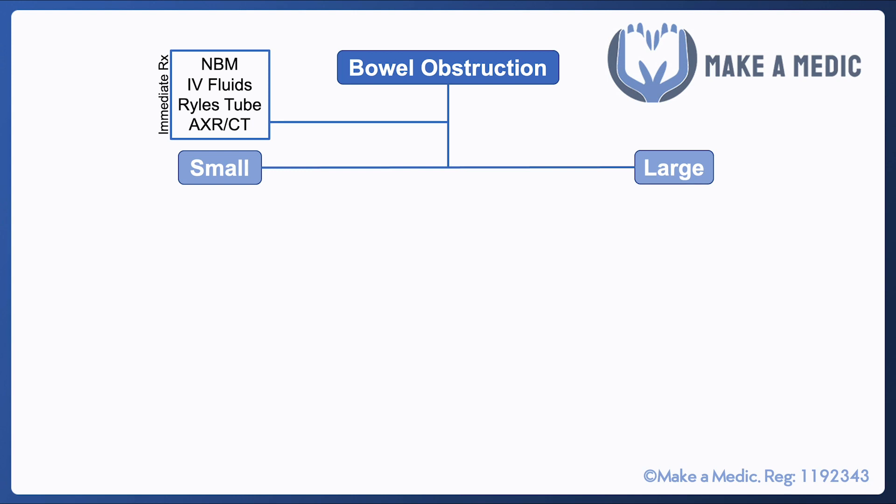The patient should be nil by mouth because if you were to give them anything to eat or drink, it's not going to go anywhere — if anything, it's just going to make them vomit. Secondly, they should be given IV fluids because they are likely to have been vomiting a great deal leading up to presentation. And thirdly, they should have a Riles tube inserted, which is a specialized type of NG tube, to aspirate any of their stomach contents.